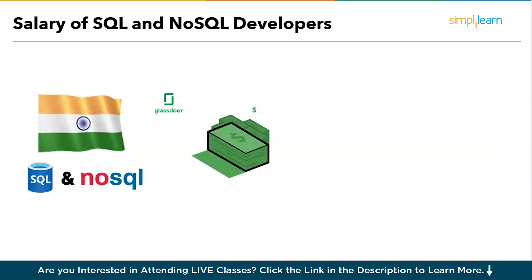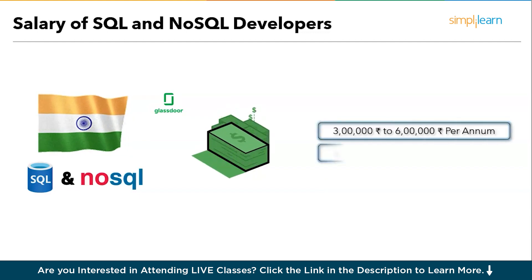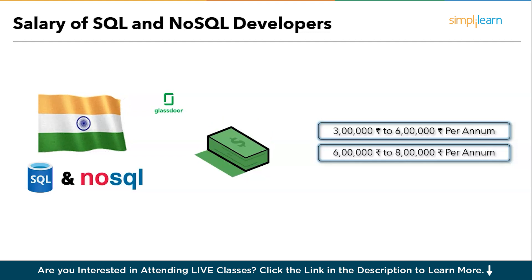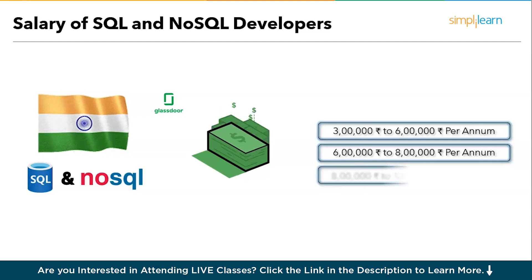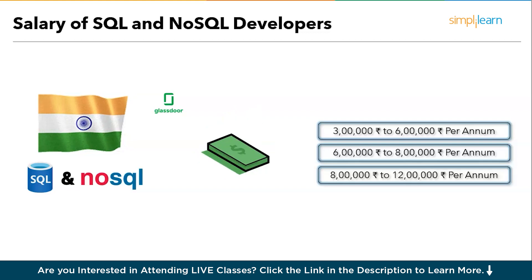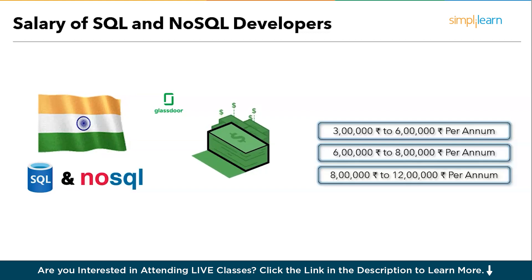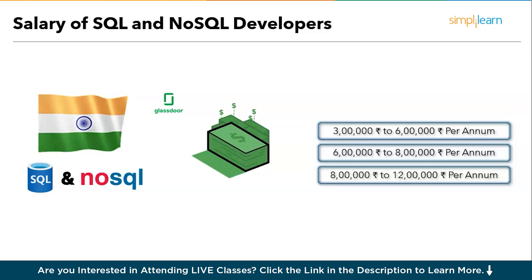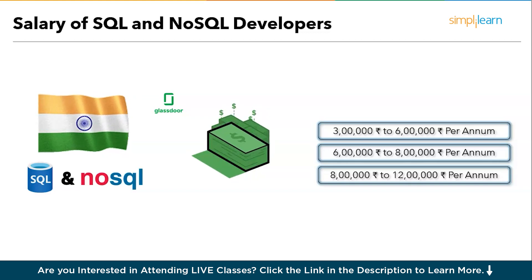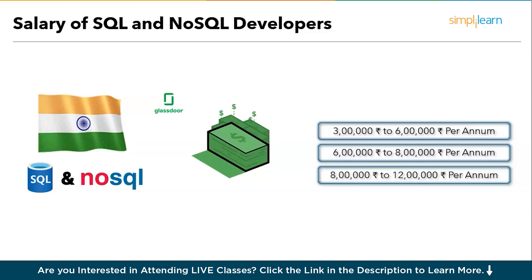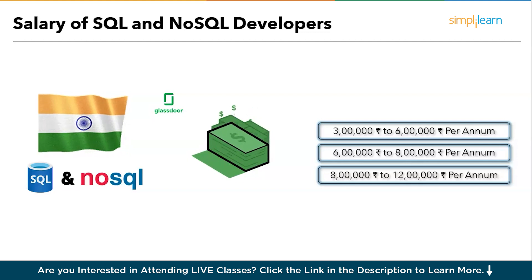If you're in India and you're a beginner in SQL or NoSQL development, salaries range from three to six lakhs per annum. If you're an intermediate candidate with two to three years of experience, you can expect salaries from six to eight lakhs per annum. If you're a highly experienced candidate with more than five years of experience, you can expect around eight to twelve lakhs per annum as a minimum or average salary, and that number can go as high as 40 to 50 lakhs per annum based on the company or technology like Oracle, or the project you're working on.